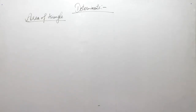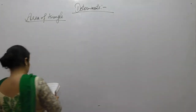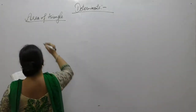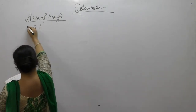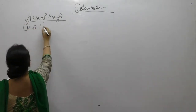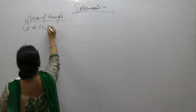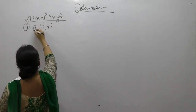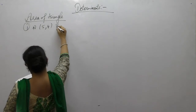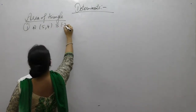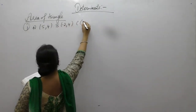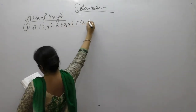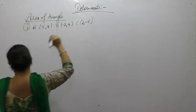Let us start with the questions. Find the area of triangle with the vertices A(5,4), B(-2,4), and C(2,-6).